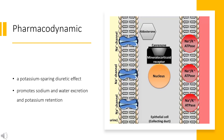Pharmacodynamics: Spironolactone has a potassium-sparing diuretic effect. It promotes sodium and water excretion and potassium retention. It increases renin and aldosterone levels. Spironolactone is a mineralocorticoid receptor antagonist and has a low affinity for the glucocorticoid receptor. It also exhibits progestogenic and antiandrogenic actions as it binds to the androgen receptor and, to a lesser extent, estrogen and progesterone receptors. Spironolactone also exhibits anti-inflammatory effects.